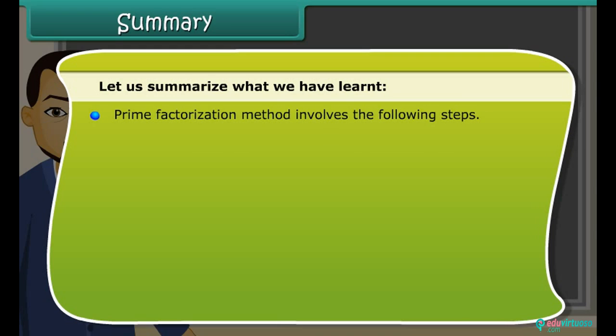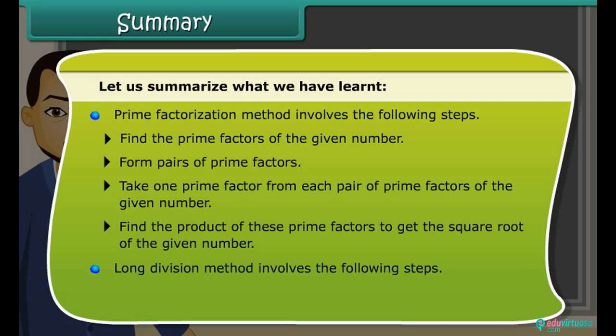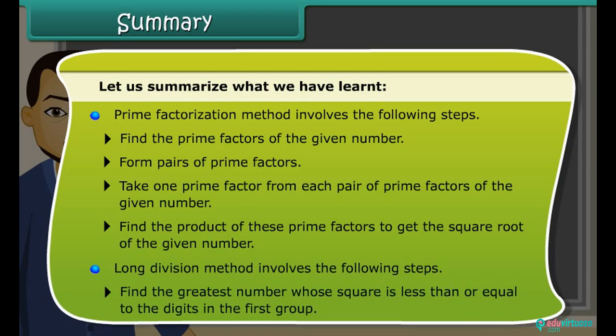Prime factorization method: Find the prime factors of the given number, form pairs of prime factors, take one prime factor from each pair, and find the product to get the square root. Long division method involves finding the greatest number whose square is less than or equal to the digits in the first group.